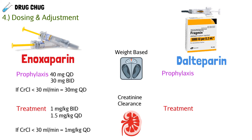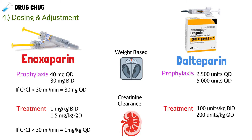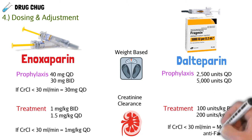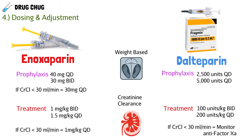Daltaparin has a similar story. For prophylaxis we can do either 2,500 units daily or 5,000 units daily. For treatment it's weight-based: 100 units/kg twice a day or 200 units/kg every day. If creatinine clearance is less than 30, we monitor these patients more closely and can check anti-factor Xa levels to determine if dose adjustment is needed.